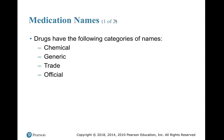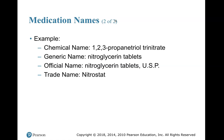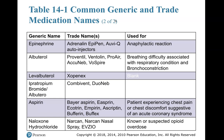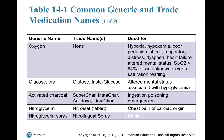Medication names: drugs have several categories of names — chemical, generic, trade, and official. For example, the chemical name might be 1,2,3-propanetriol trinitrate; the generic name is nitroglycerin tablets; the official name is nitroglycerin tablets USP; and the trade name is Nitrostat. Review the table of common generic and trade medication names and what each is used for, focusing on the generic name and its use.